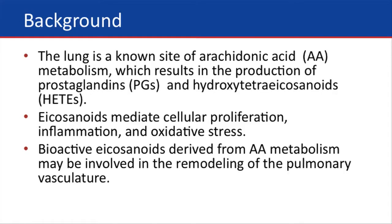Why was it important to evaluate the presence of eicosanoids in the lung of PAH patients? Well, eicosanoids are small lipid molecules that are formed from breakdown of a major lipid molecule called arachidonic acid, which sits on the membrane of all the cells. And we know that in patients with pulmonary arterial hypertension, there's an abnormal balance of those eicosanoids.